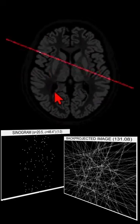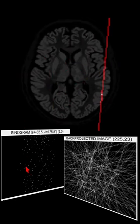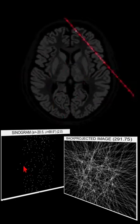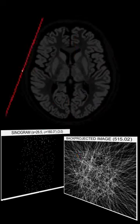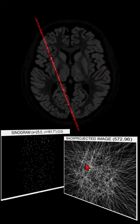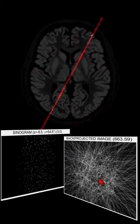These have been detected and histogrammed, or binned, into a sinogram. And in the back projected image, we've got a buildup of all of these superimposed lines.